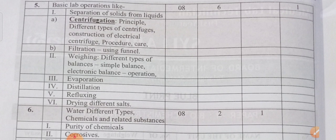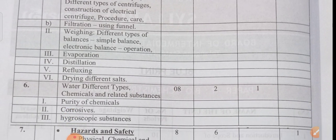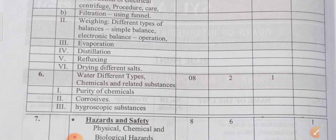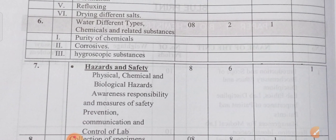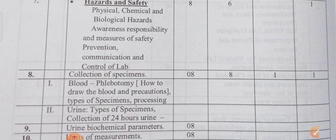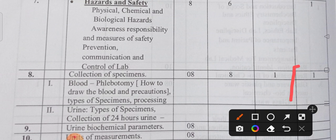Construction and operation of electrical centrifuge — this is the long question. Basic lab operations include weighing, evaporation, distillation, refluxing, drying, different salts, and water types. Sixth topic is water — different types. Seventh topic is hazards and safety, which may get 8 marks weightage. Collection of specimens is also very very important, carrying 8 marks weightage.